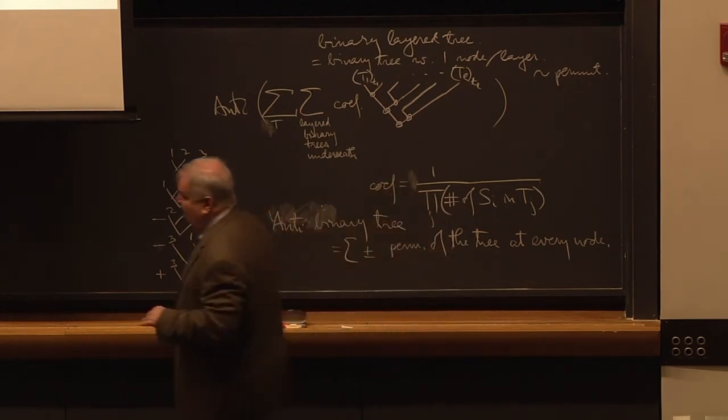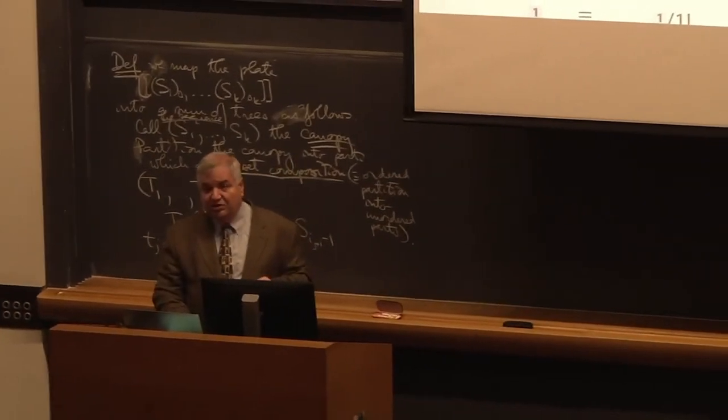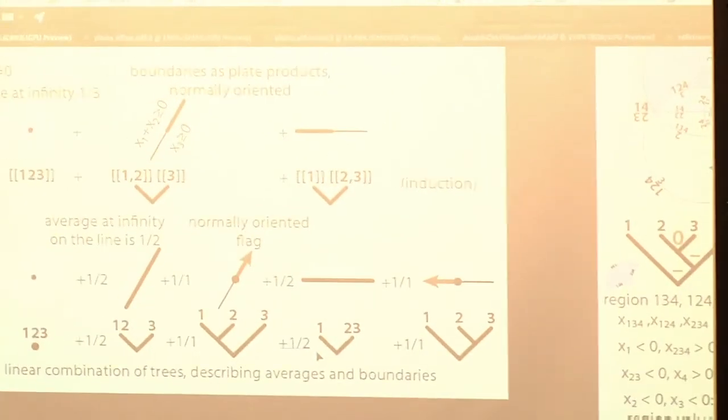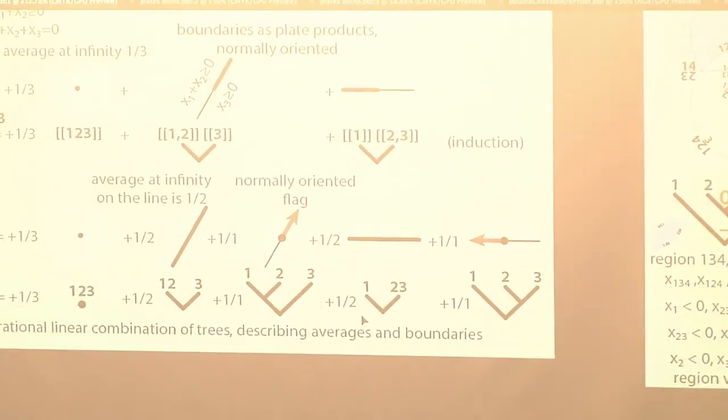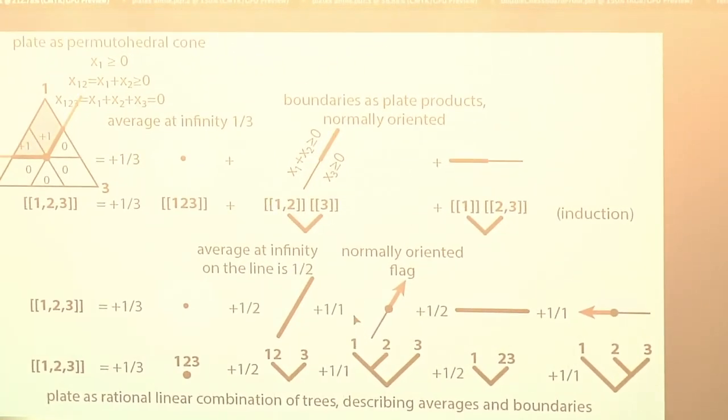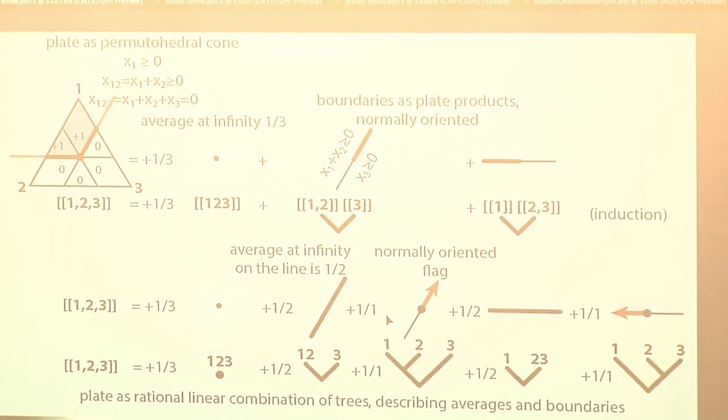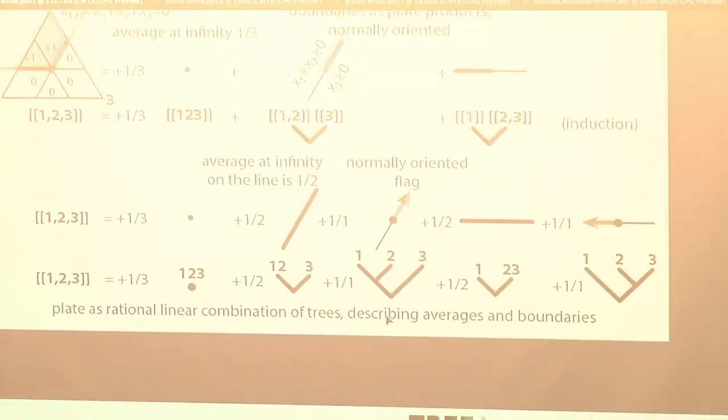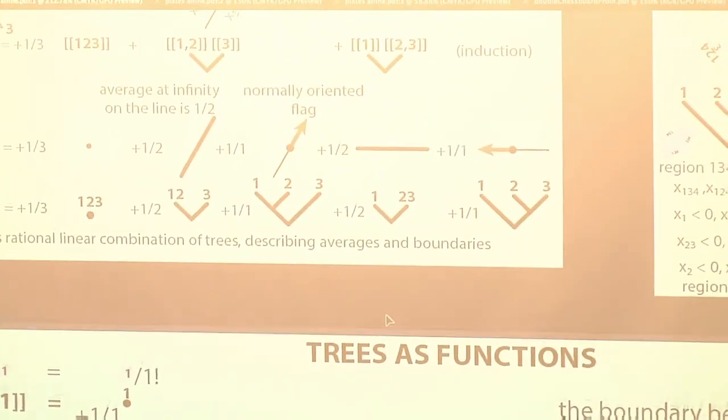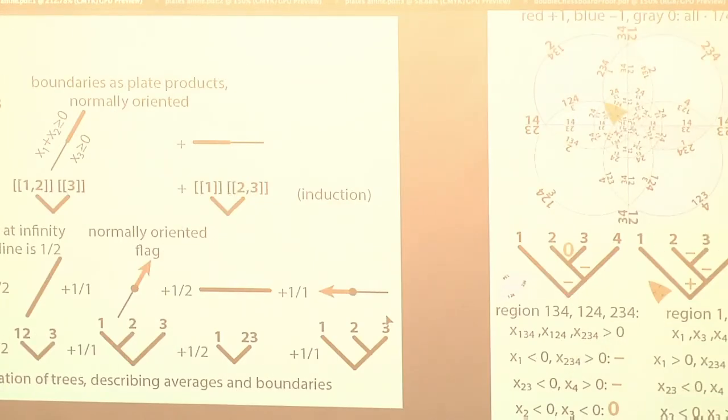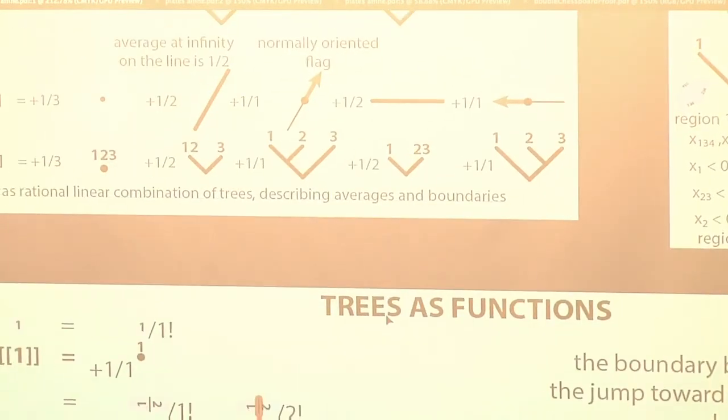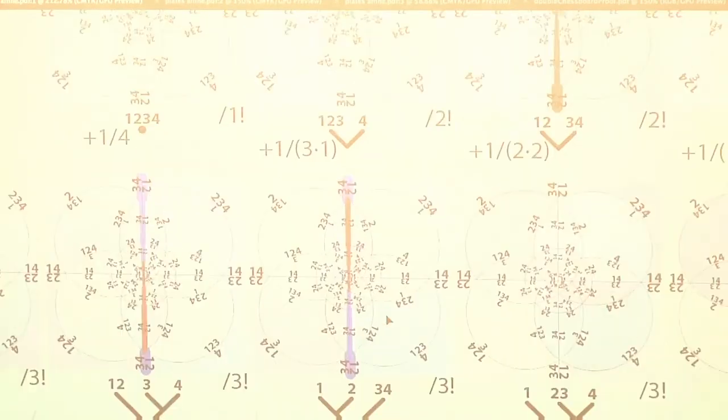So what we do is for instance when we have one two three we map it into one two three minus two one three plus minus three one two plus three two one yes so we anti symmetrize every node this is done for gluing and this is the expression of a tree. So this way we have expressed every matrix in terms of trees and I want to show you the opposite part.